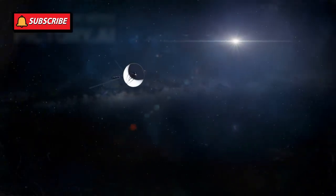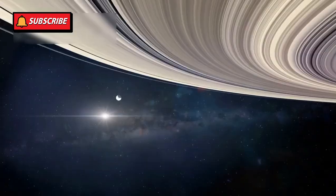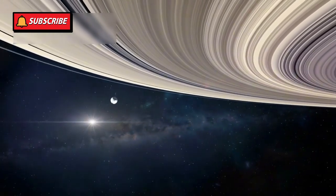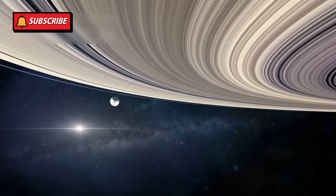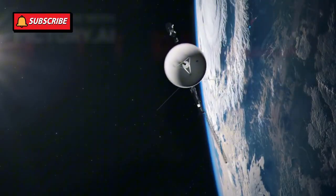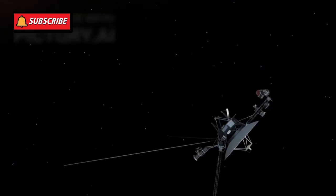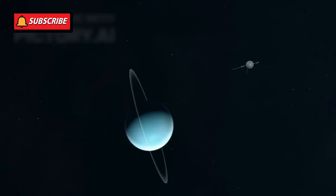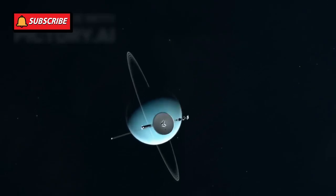Voyager 1 left Earth in 1977. It was sent out to study the outer planets, Jupiter and Saturn. But after its job was done, it didn't stop. It kept going. Engineers planned for a short mission, but what they built has lasted for nearly five decades.